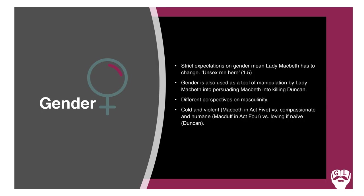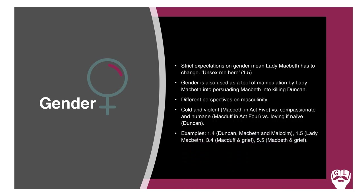There is also a third presentation of man as loving yet naive in Duncan — he cannot see the treachery before him. He says, referring to the first Thane of Cawdor: 'There's no art to find the mind's construction in the face' — effectively that he doesn't know who to trust. The irony is that one of the people he does trust, Macbeth, ends up murdering him.